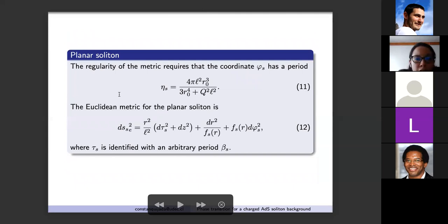To ensure regularity we add a constant contribution to the gauge field. This constant is related with a net magnetic flux along the z-axis at the boundary. The regularity of the metric requires that the coordinate psi_s has a period eta_s given by equation eleven. Equation twelve corresponds to the Euclidean metric for the soliton solution where the coordinate tau is identified with the arbitrary period beta_s.